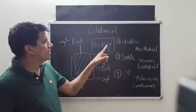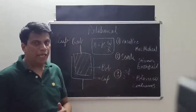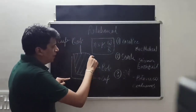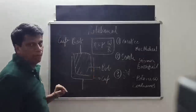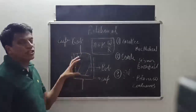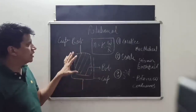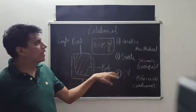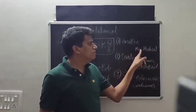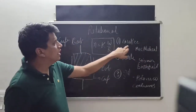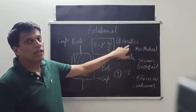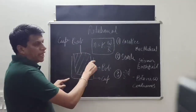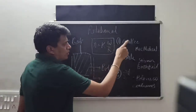Cup and bob viscometers are further classified into three types, but before that let me tell you what is the cup and what is the bob. The hollow cylinder, the outer part, is known as the cup; the inner solid part is called the bob. In this equipment, either the cup rotates or the bob rotates. The Couette type, whose example is the MacMichael viscometer, is the cup and bob viscometer where the cup is rotating and measurement is done on the bob.